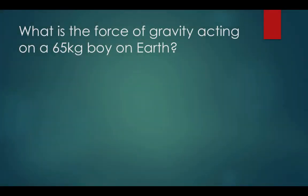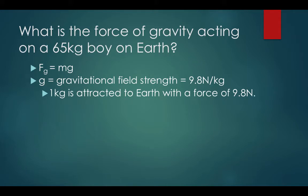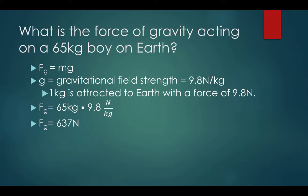What is the force of gravity acting on a 65-kilogram buoy on Earth? Force of gravity equals mass times gravity, where g, gravity, is also known as gravitational field strength, which is equivalent to 9.8 newtons per kilogram or 9.8 meters per second squared downwards. One kilogram is attracted to Earth with a force of 9.8 newtons. Fg equals 65 kilograms times 9.8 newtons per kilogram. Notice how the kilograms cancel out. The force of gravity acting on this 65-kilogram buoy is 637 newtons.